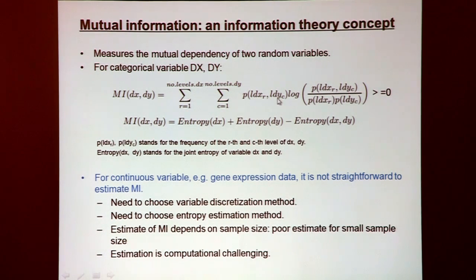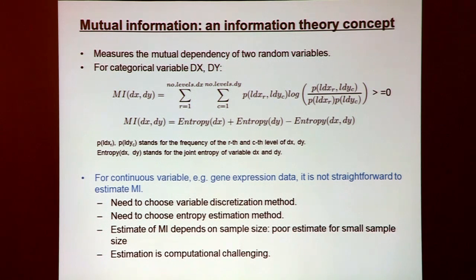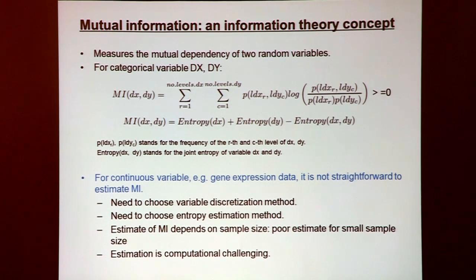Estimation of the mutual information measure is often computationally challenging, and there are different philosophies for estimating it for numeric variables. Here I evaluate this measure specifically using the equal-sized bin splitting approach I described.